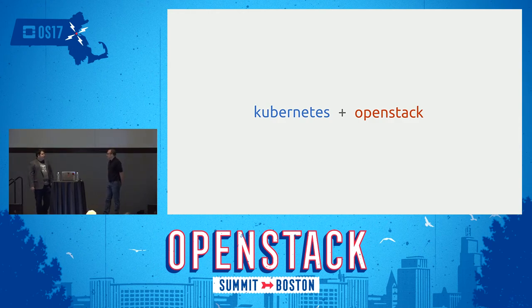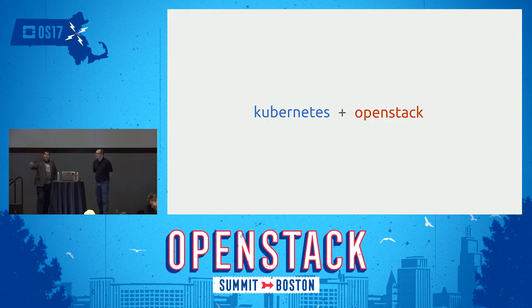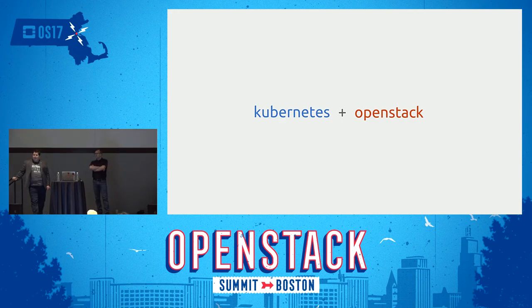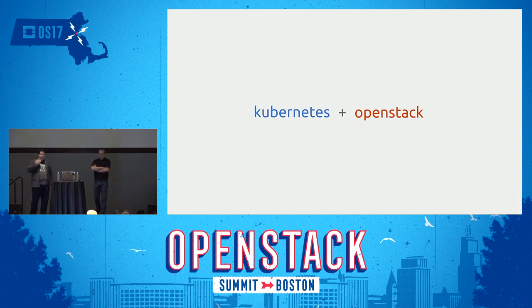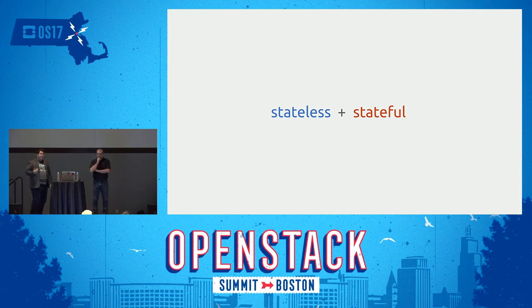Kubernetes and OpenStack together is an interesting combination, with more than a couple of approaches and varying reasons for doing one over the other or all together. What I've come to start accepting — I was always happy to say the future is containers — but I think it's actually a different story. After trying to push everything into a container, running everything on Kubernetes or Swarm, it really comes down to your architecture, and what it boils down to is whether you're running something stateless or something stateful.